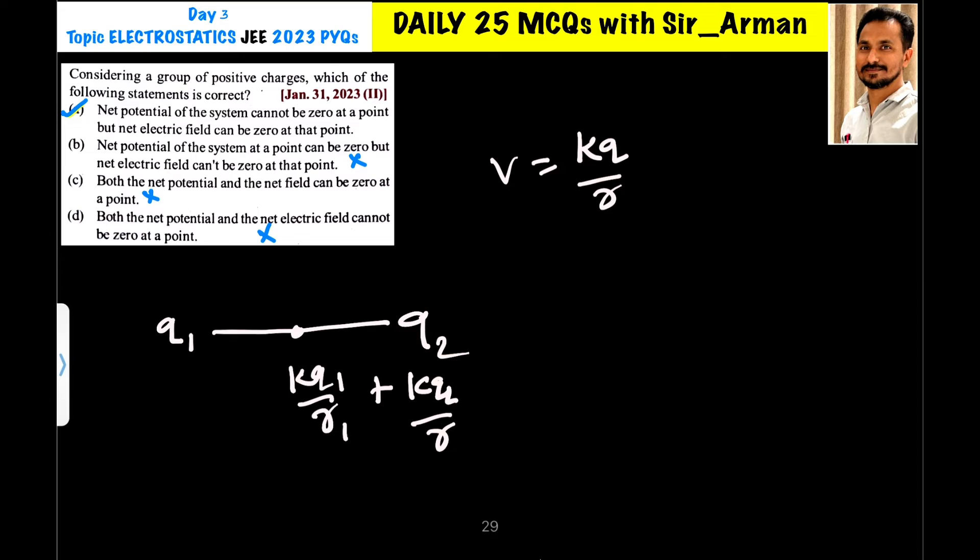As all charges are positive, as all the charges are positive, then in that case, the potential will only added. And if the potential is added, then there will be no zero potential.